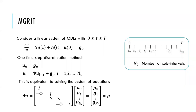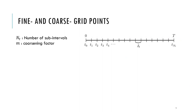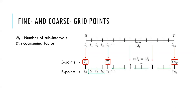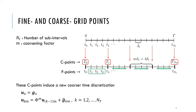MGrit solves this system iteratively with the combination of relaxation and error correction from a coarse grid. We create a coarser grid from the original fine grid using the coarsening factor M. As an example, let M equal 4. The first coarse grid point is T_0, and after four subintervals, since M equals 4, we have the new coarse grid point T_1, and so on. These are called C points, and points that are not C points are called F points. These C points induce a coarser time discretization.